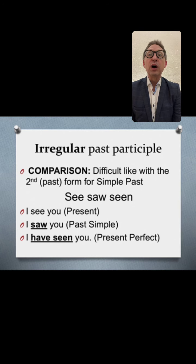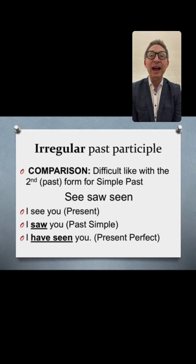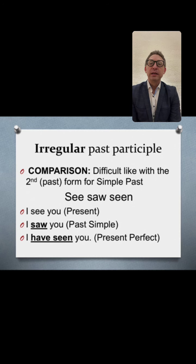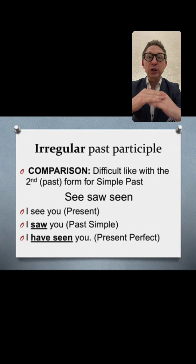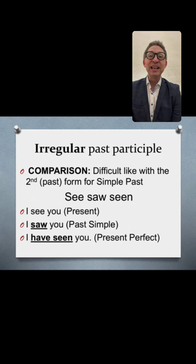Irregular verbs are troublesome because there's no pattern. They're irregular — you can't guess what they'll look like, you just have to know them. Memorize them, use them, and then they become familiar, and then they become regular in your mind. So the irregular past participle is where present perfect and simple past share a common difficulty — both tenses require you to know the irregular forms.